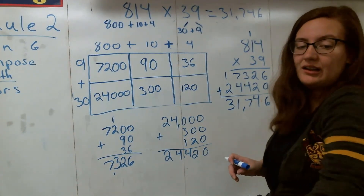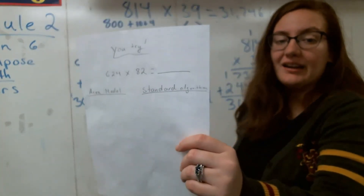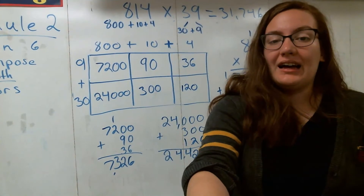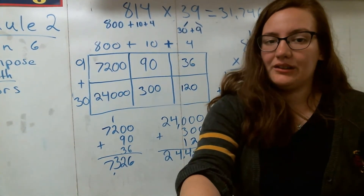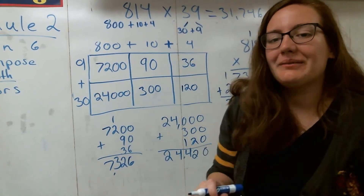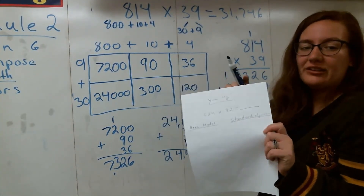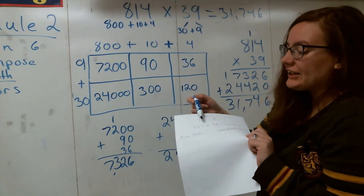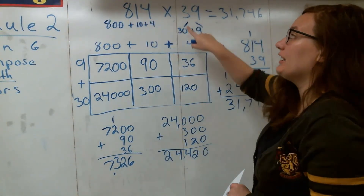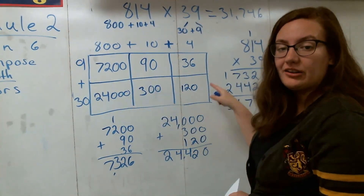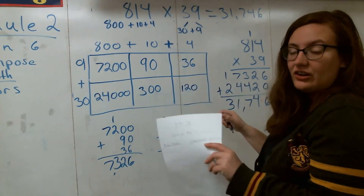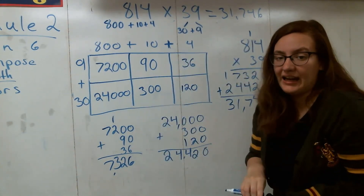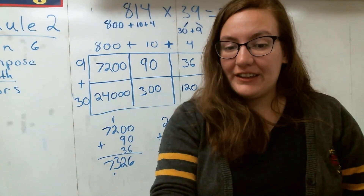Your job now is to try the 'you try' problem on the back. This problem is very similar to what you're seeing on the board right now — it's a three-digit number times a two-digit number, just like 814 times 39. Use this area model to help you figure out the answer and set up your area model. Go ahead and finish the 'you try' problem and then check in with me when you are done. Awesome job today, fifth graders, and good luck!